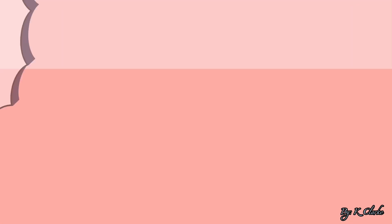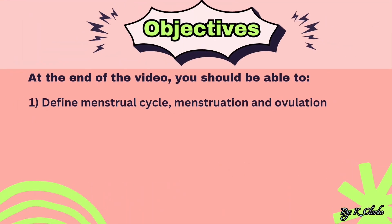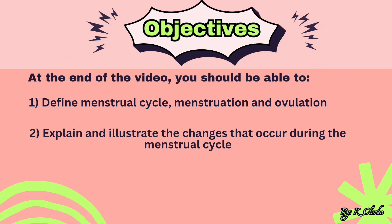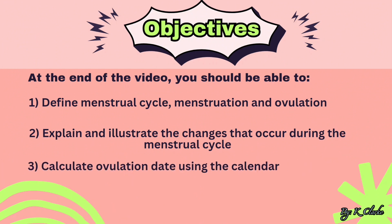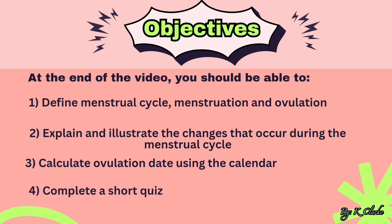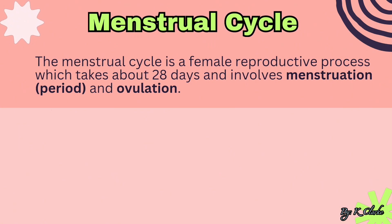The menstrual cycle. At the end of the video, you should be able to: define menstrual cycle, menstruation, and ovulation; explain and illustrate the changes that occur during the menstrual cycle; calculate ovulation date using the calendar; and complete a short quiz.